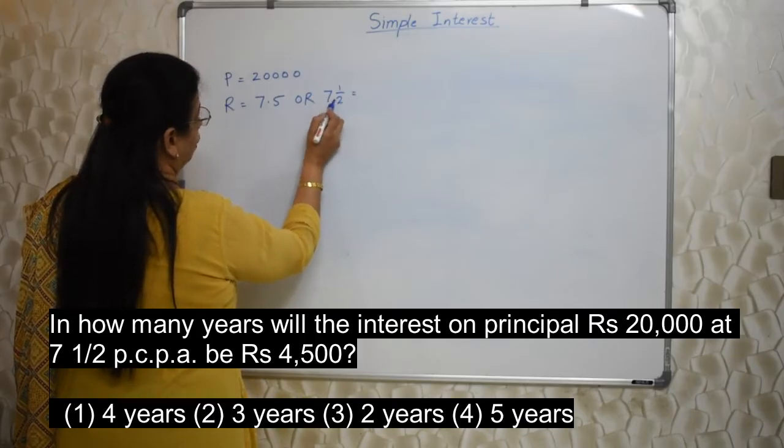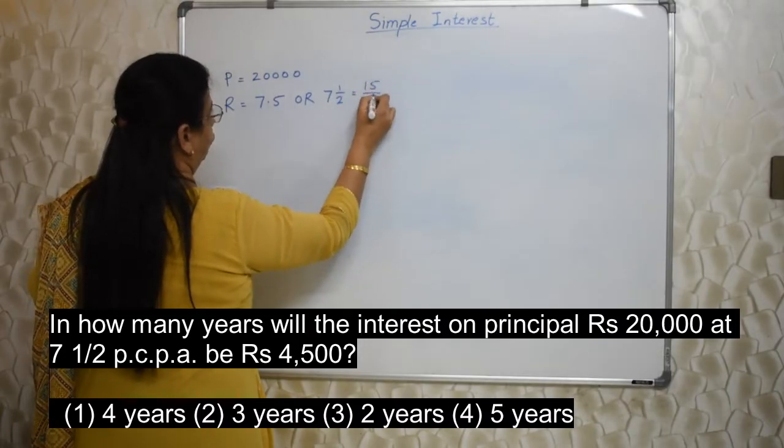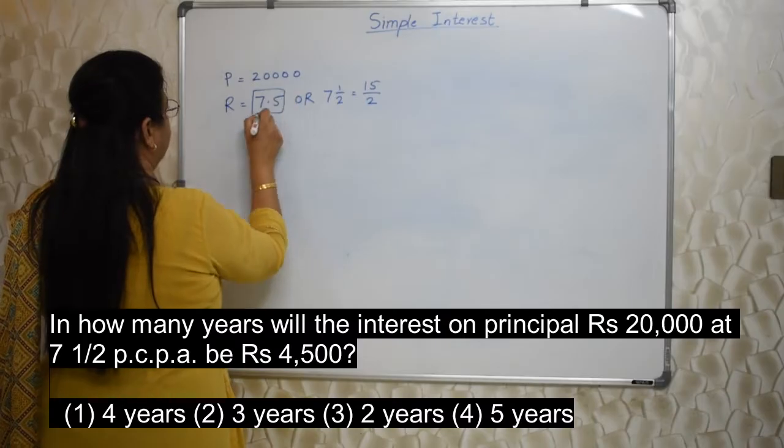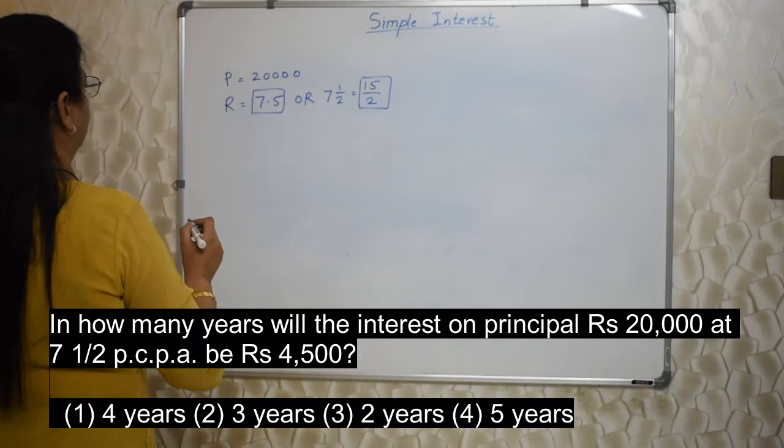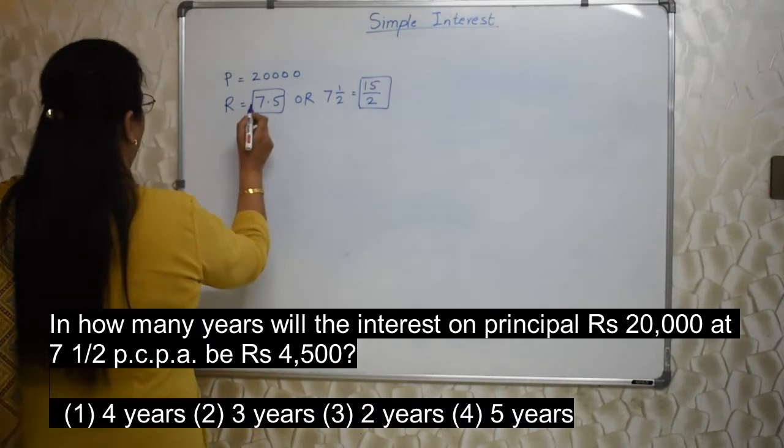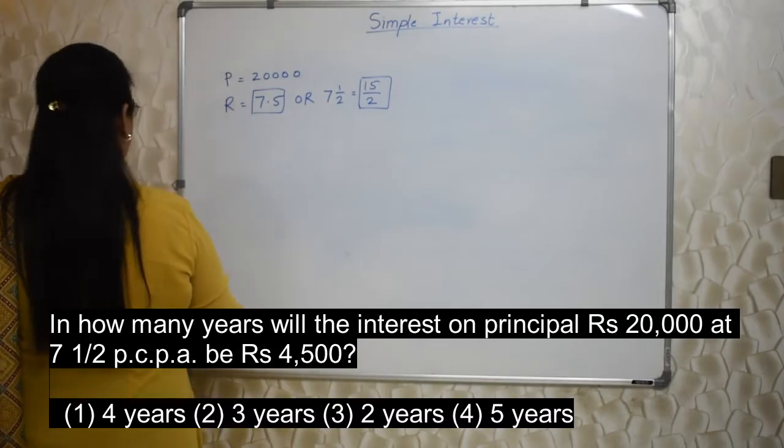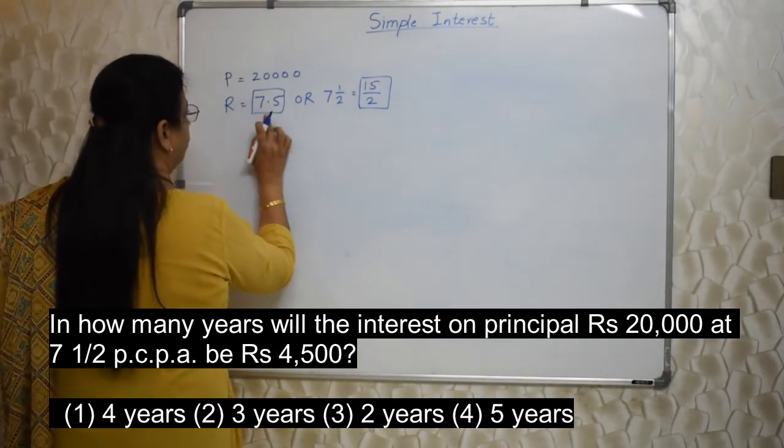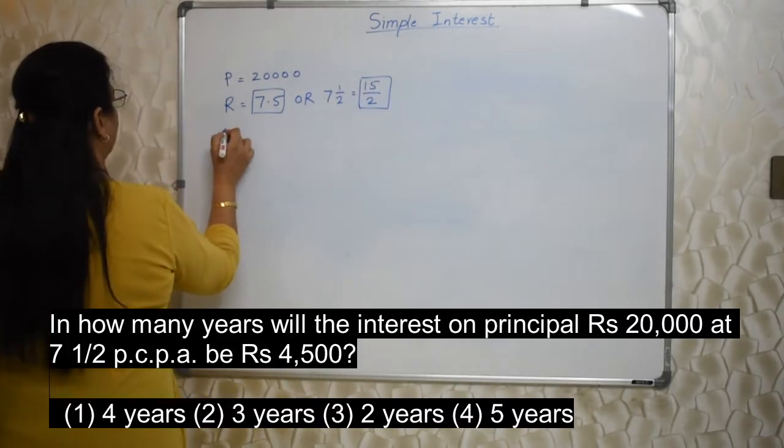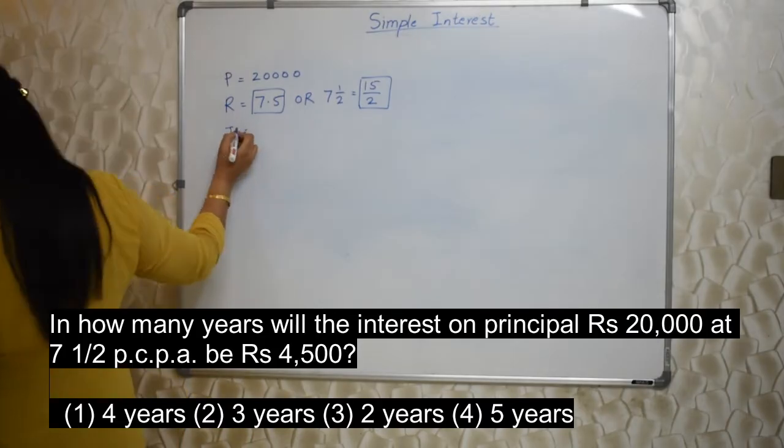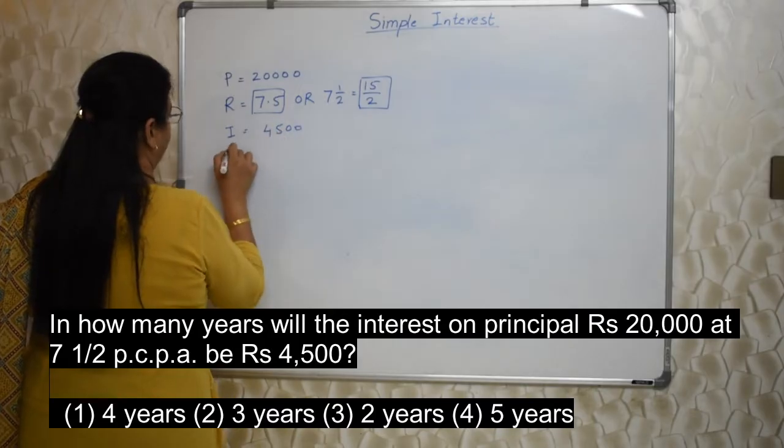7 into 2, 14, 14 plus 1, 15. So 15 upon 2. So you can write R as this or R as this. We will solve with both the R's. The value is same. But this is in decimal, this is in fraction. If you are comfortable doing with decimal, you can use this. If you are comfortable in fraction, you can use this. Interest they have given, that is 4,500. And they have told us to find out N.